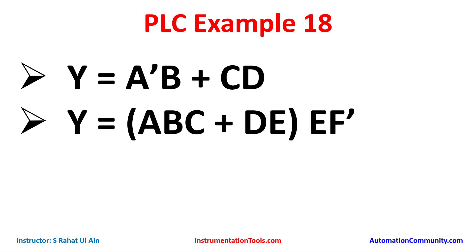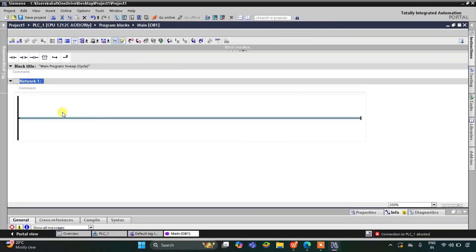E as a normally open contact and F-not as a normally closed contact will be connected in series with each other as well as with the ABC-plus-DE branch. Let's move to TIA Portal.